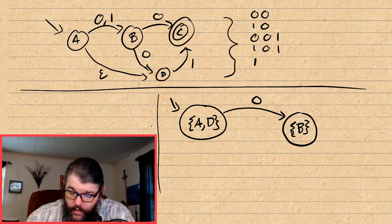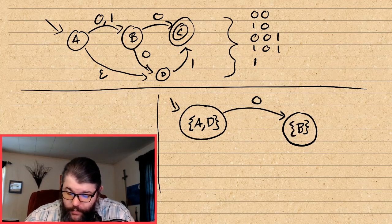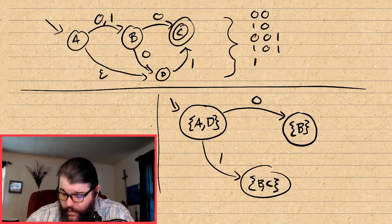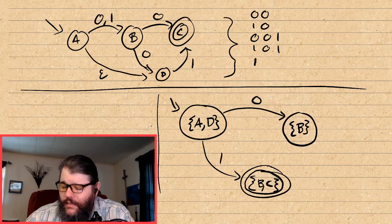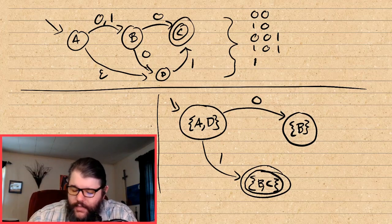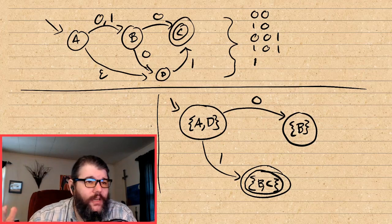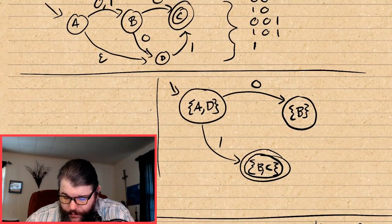Now let's look at what happens if I see a 1. A on a 1 also goes to state B. But D on a 1 goes to state C. So now I can be in state B or C — in both of them. What's also special about this state is that C is an accept state. Any time an accept state shows up in our set of states, we call this thing an accept state. So the set {B, C} is an accept state, because one of the active states is an accept state.